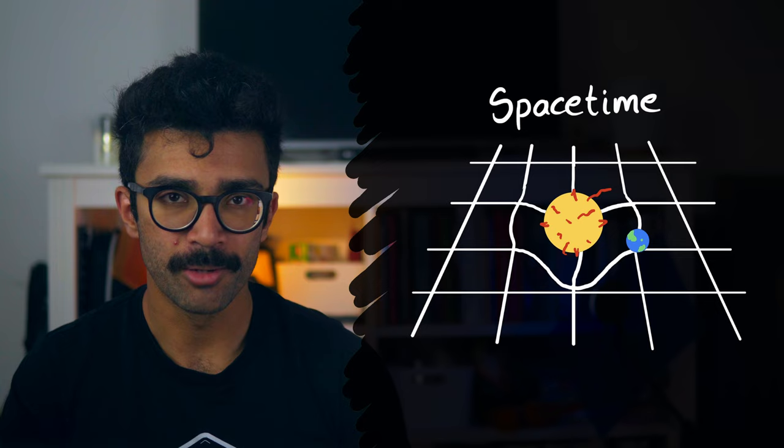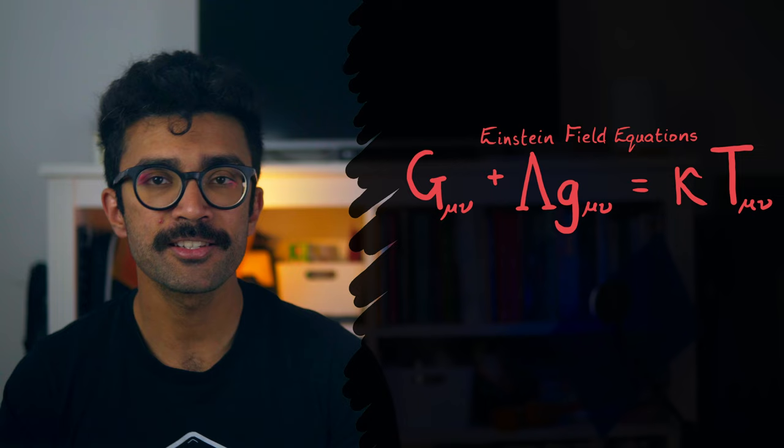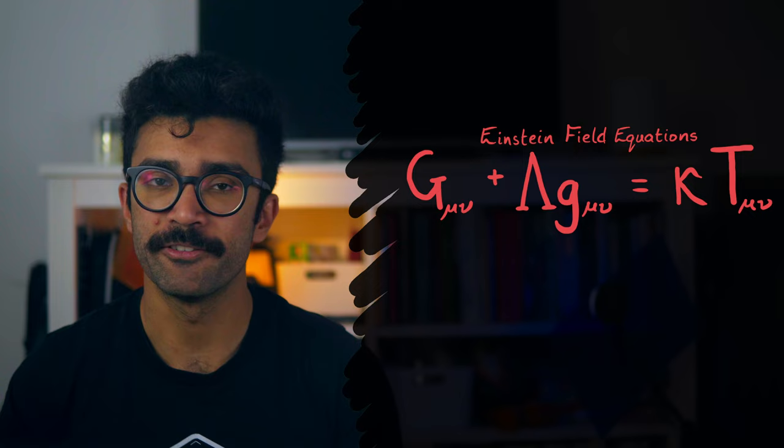And other objects moving in that region of space-time follow that curvature. So basically, mass makes space-time warp and curve, and this curvature determines how objects move through it. Einstein's field equations tell us exactly how this happens. It answers questions like exactly how much mass you need to make space-time warp by a specific amount.